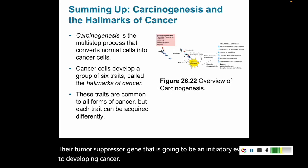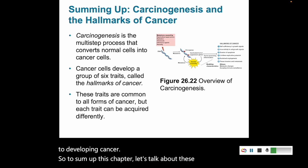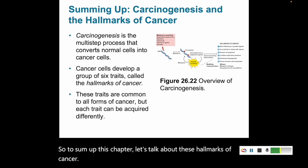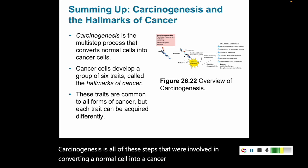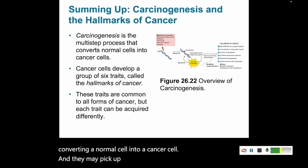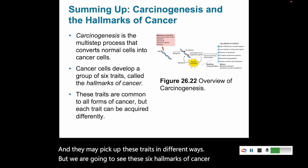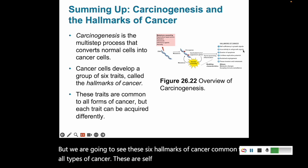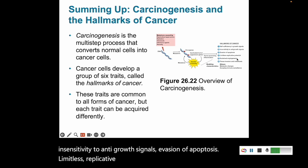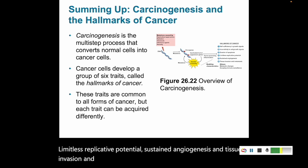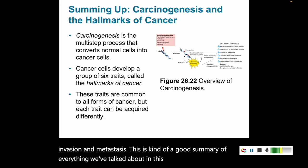To sum up this chapter, let's talk about the hallmarks of cancer. Carcinogenesis involves all the steps in converting a normal cell into a cancer cell, and cells may pick up these traits in different ways. We are going to see six hallmarks of cancer common to all types: self-sufficiency in growth signals, insensitivity to anti-growth signals, evasion of apoptosis, limitless replicative potential, sustained angiogenesis, and tissue invasion and metastasis.